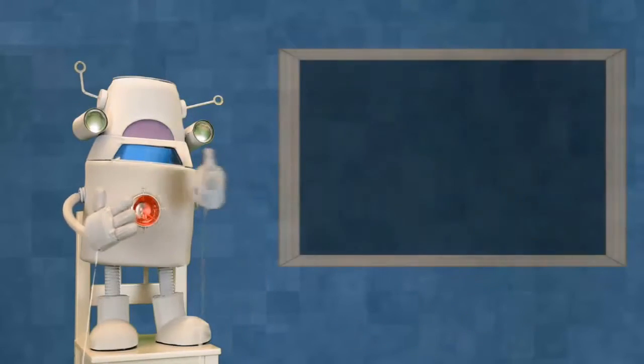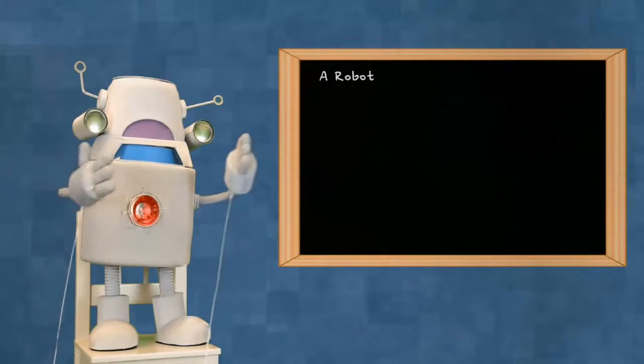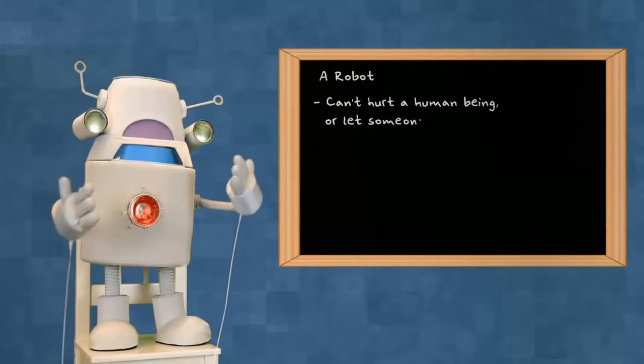According to Mr. Asimov's rules, a robot can't hurt a human being or let someone else hurt a human being.